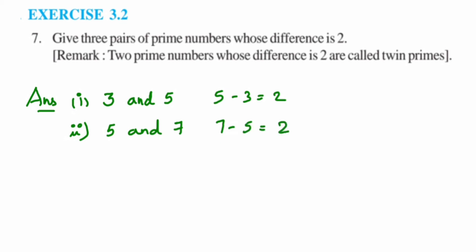And the third pair will be, you can take 11 and 13, and 13 minus 11 is also equal to 2. So these are three pairs. You can write any other pair if you have in mind. These are simple numbers which I have taken.